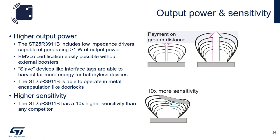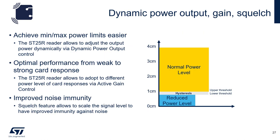The 3911B receiver has 10 times higher sensitivity than any other competitor. This is due to the three independent gain stages on both the phase and amplitude channels of the receiver. The device also features dynamic power output, gain, and squelch.